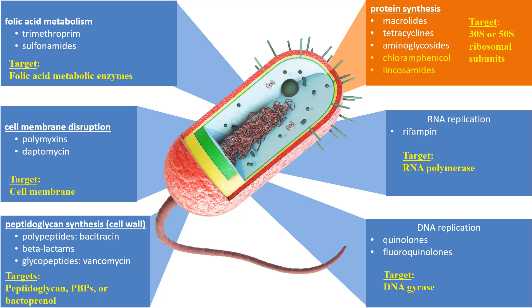If proteins can't be made, the cell stops metabolizing and stops growing. The fifth mode of action is to prevent RNA synthesis by binding to RNA polymerase. And the last mode of action is to bind to DNA gyrase, thus preventing DNA replication.